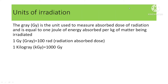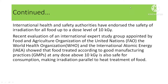Let's now talk about the units of irradiation. Radiation dose is defined as the quantity of radiation energy absorbed by the particular food as it passes through the radiation field during processing. The gray is the unit used to measure the absorbed dose of radiation and is equal to 1 joule of energy absorbed per kg of matter being irradiated. 1 gray equals 100 rads (radiation absorbed dose), and 1 kilogray equals 1000 gray. International health and safety authorities have endorsed the safety of irradiation for all foods up to a dose level of 10 kilogray.